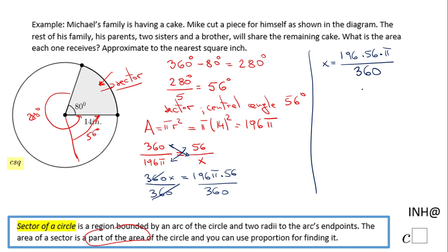I end up with the decimal 30.48, and I'm going to multiply that by π. I get 95.78. I'm going to stop here because the problem says